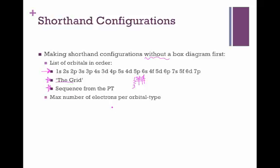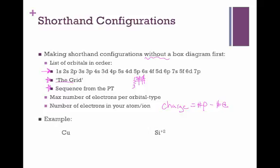To make your own shorthand configuration, we need the list of orbitals, the maximum number of electrons per orbital type, and the actual number of electrons in your atom or ion. The equation for that is: charge equals the number of protons minus the number of electrons. For example, the element copper is element number 29 on the periodic table. Its charge is zero, which means it also has 29 electrons. We can take this list of orbitals already in order and just start filling them up. 1s is the first one. An s orbital can hold 2. 2s2, 2p6. We've now used 2, 2, and 6, which is 10 of our 29 electrons.